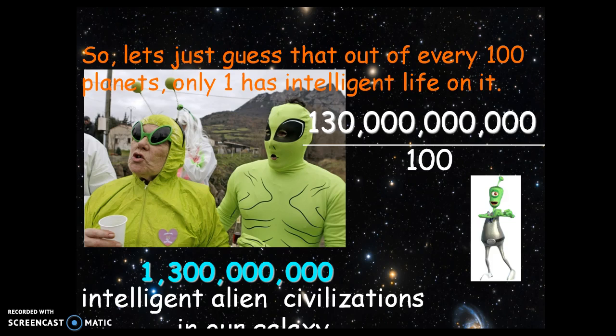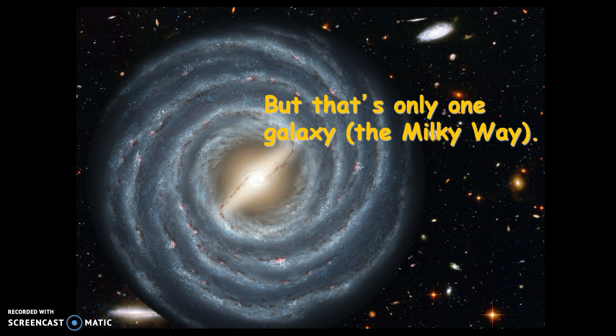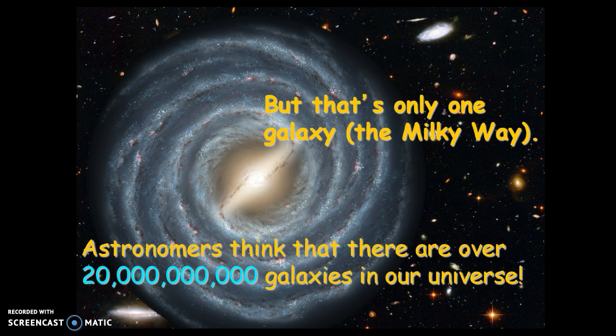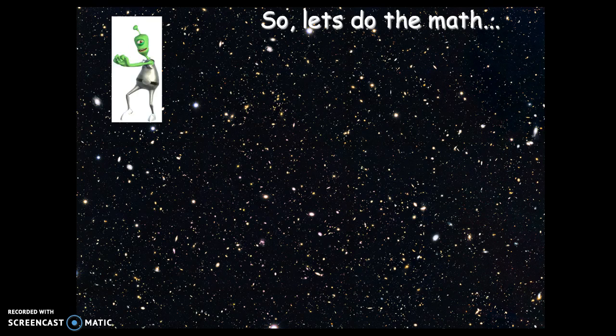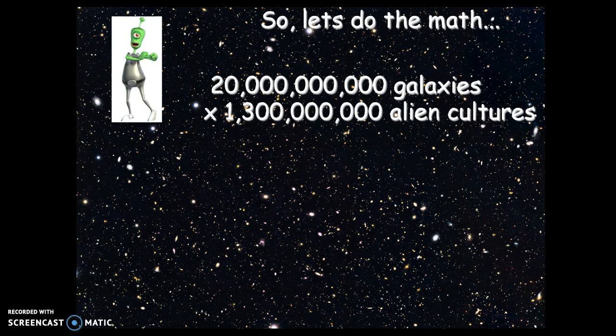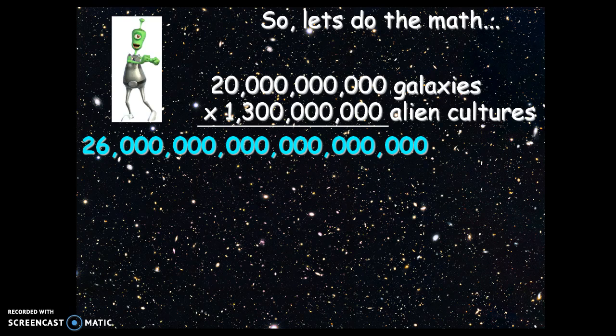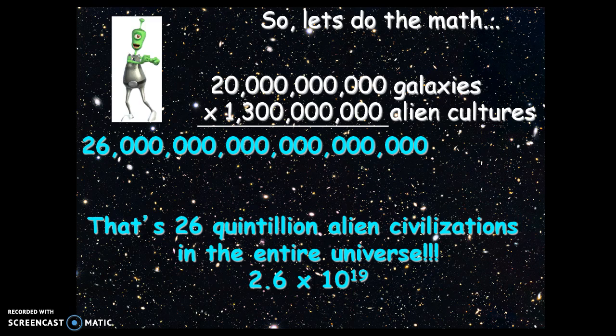So the vast majority of stars out there actually won't have intelligent life, and a very small fraction will. But even with that, the number is huge. And consider — that's just one galaxy, ours, the Milky Way. What about all of the other galaxies out there? Astronomers currently estimate there are 20 billion galaxies in our universe. So if each of them had 1.3 billion alien civilizations — that's a lot of zeros — that works out to 26 quintillion alien civilizations in the entire universe. That's 2.6 times 10 to the 19th power. It's a huge number, and yet it represents an incredibly small amount of the total planets out there.